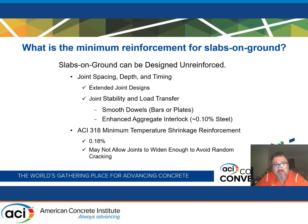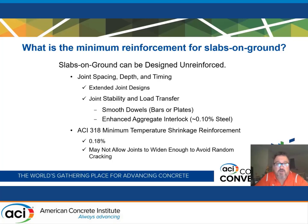ACI 318 unfortunately includes a minimum temperature-shrinkage reinforcement percentage of 0.18%. This is more than the 0.1% steel for enhanced aggregate interlock, but significantly less than the 0.5% steel needed for crack width control. So if you use 0.18%, the risk is that you'll get out-of-joint cracking, and the width of those cracks will require maintenance. This is a percentage of steel not recommended for concrete floors on ground subjected to repetitive loading.